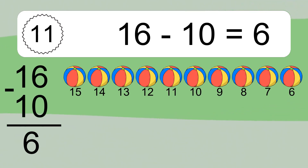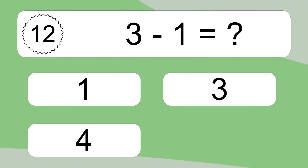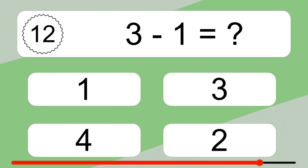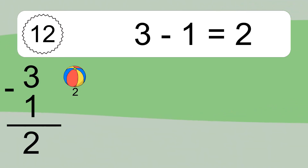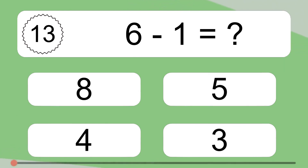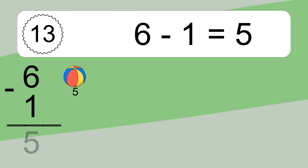16 minus 10 equals what? 16 minus 10 equals 6. Let's count it: 15, 14, 13, 12, 11, 10, 9, 8, 7, 6. 6 minus 1 equals 5. Let's count it: 5.